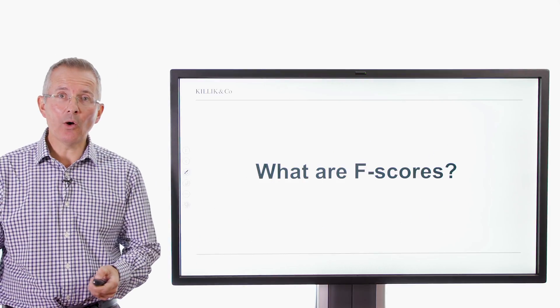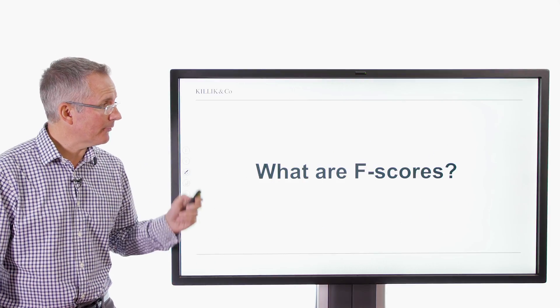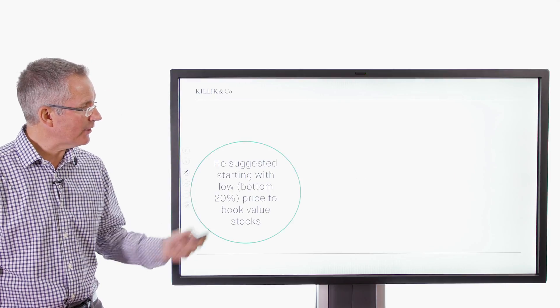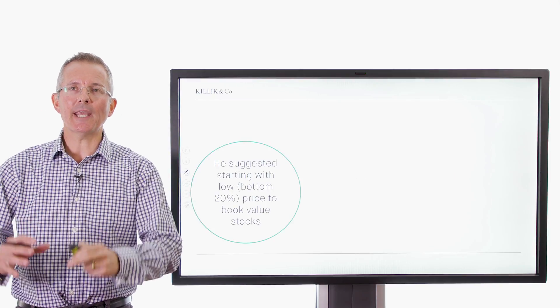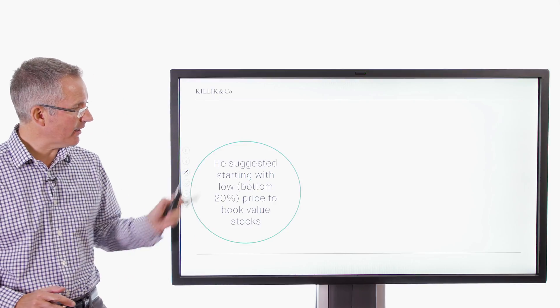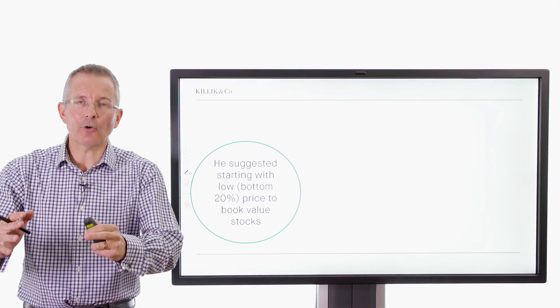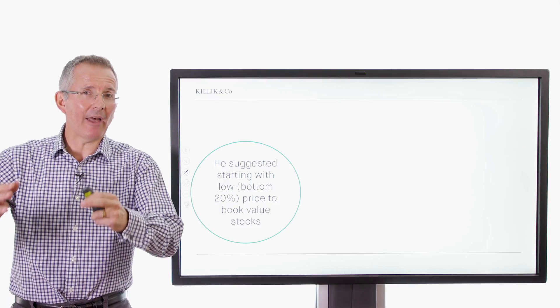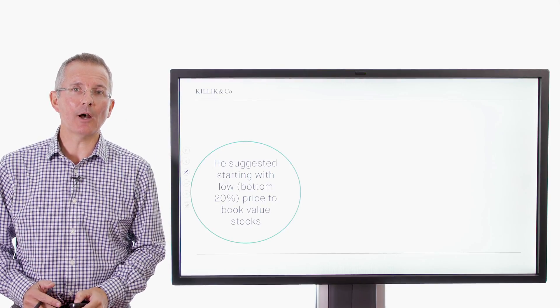Now, what are F-scores? Well, they're made up of a number of components. So one number, lots of bits. So he suggested you start by screening out basically your price to book value stocks. Take the bottom 20%. So you're looking for stocks that are cheap. And then what you're going to do is apply F-scores to them to work out where the best value lies.